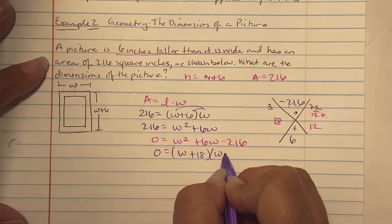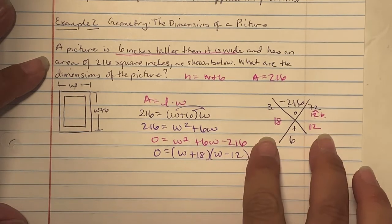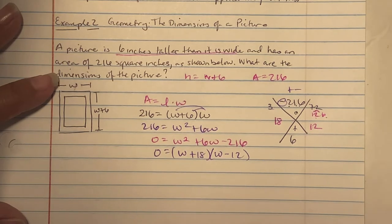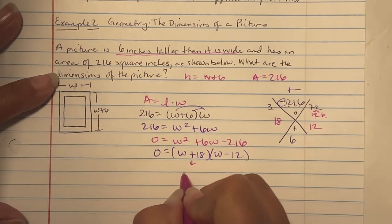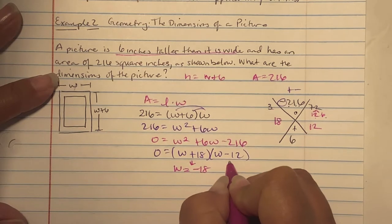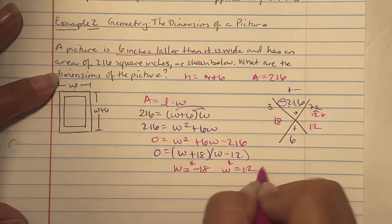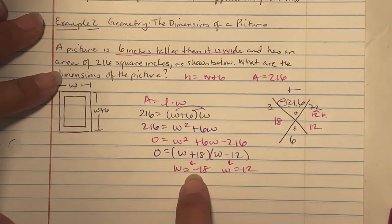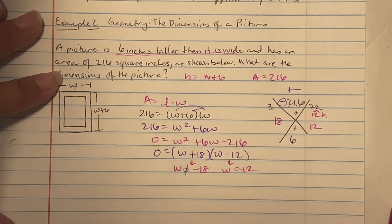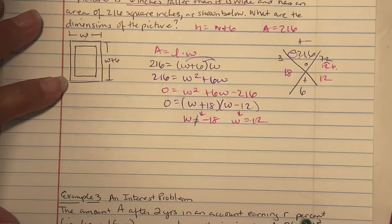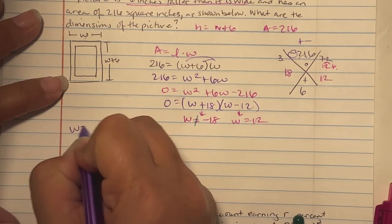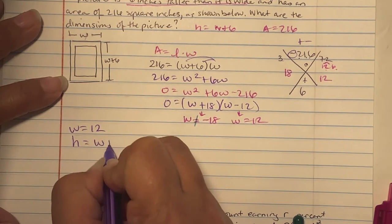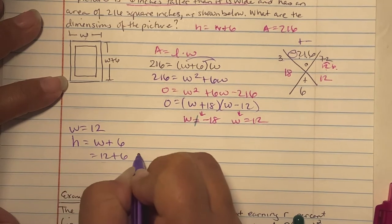So we have zero equals W plus 18, W minus 12. Remember, one has to be positive and one has to be negative to give you a negative 216. This is the situation where units of measurement cannot have negative numbers. Negative 18 cannot be the width of our picture frame. So our width is 12, and the height is width plus six, so 12 plus six is 18. Here are your two dimensions.